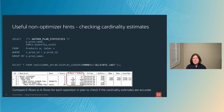The E rows column shows the estimated number of rows the optimizer believed would come back from each operation — often called the cardinality estimate. The A rows column shows the actual number of rows seen for each operation during execution. Having those two columns side by side lets you quickly compare whether the optimizer made a good cardinality estimate, since a misestimate in cardinality is probably the leading cause of a poor plan choice or performance problems.